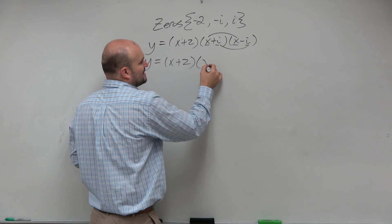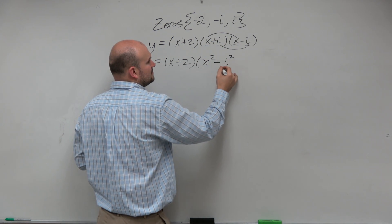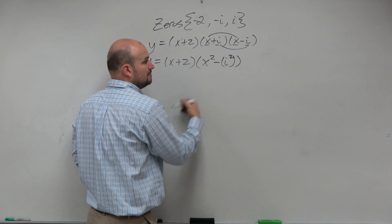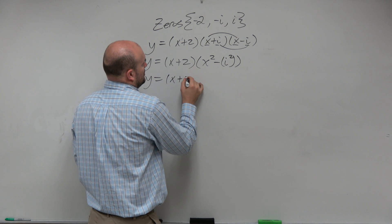So when I multiply x times x, I get x squared. i times negative i is negative i squared. But we know i squared is negative 1, so minus negative 1 is 1.